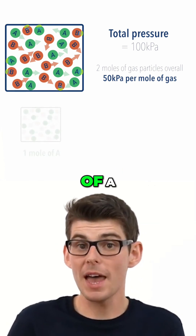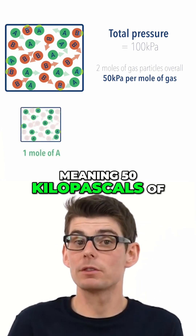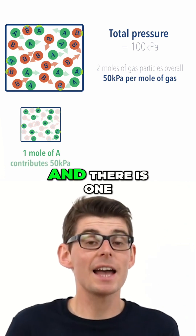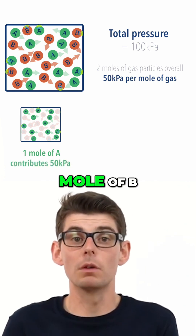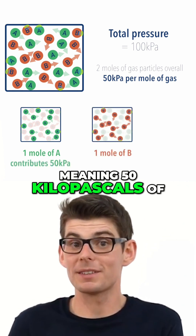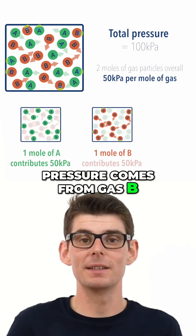There is one mole of A, meaning 50 kilopascals of pressure comes from gas A, and there is one mole of B, meaning 50 kilopascals of pressure comes from gas B.